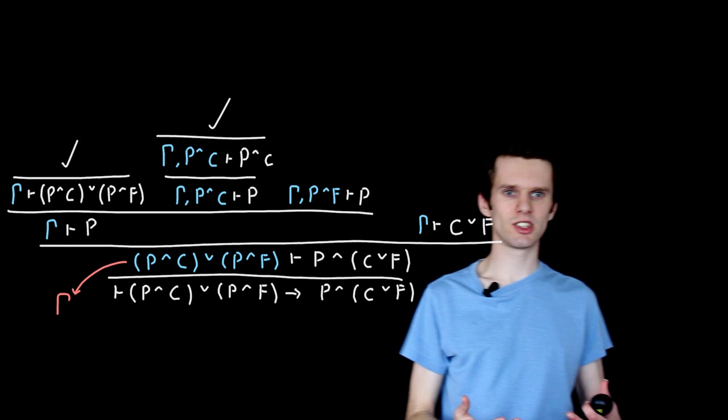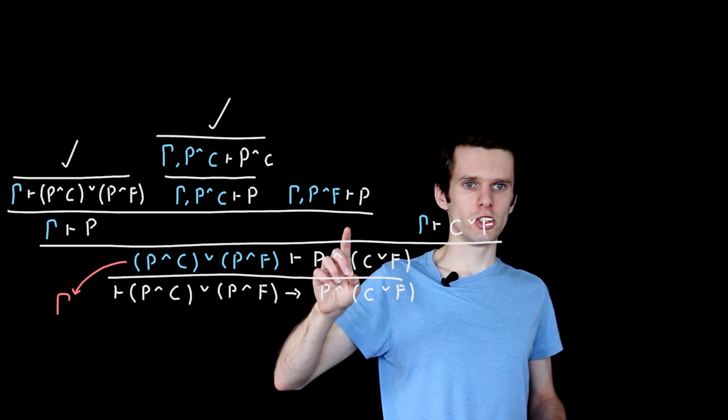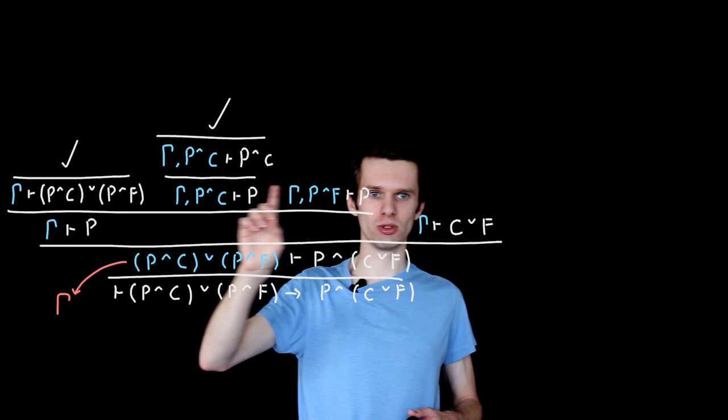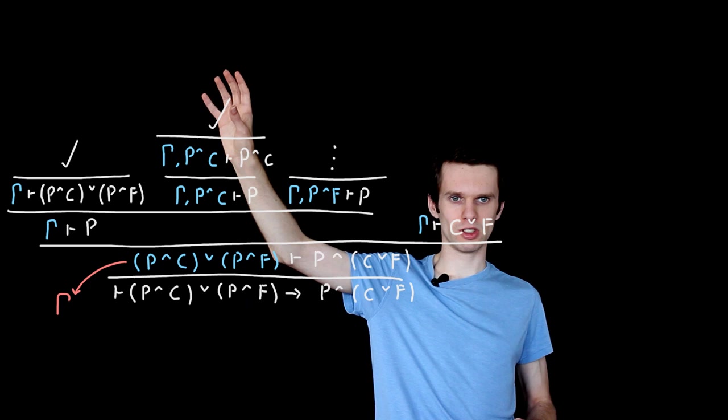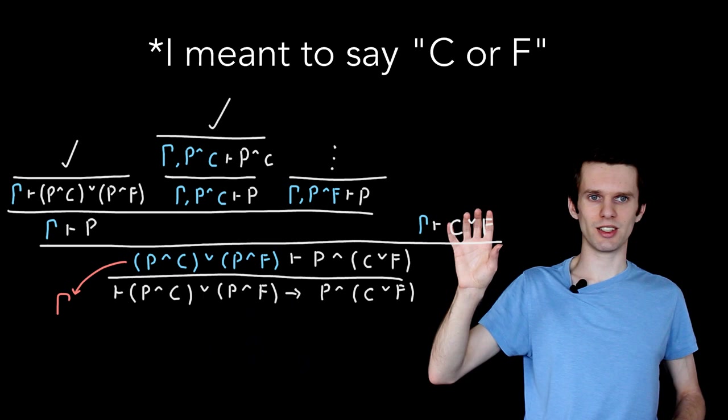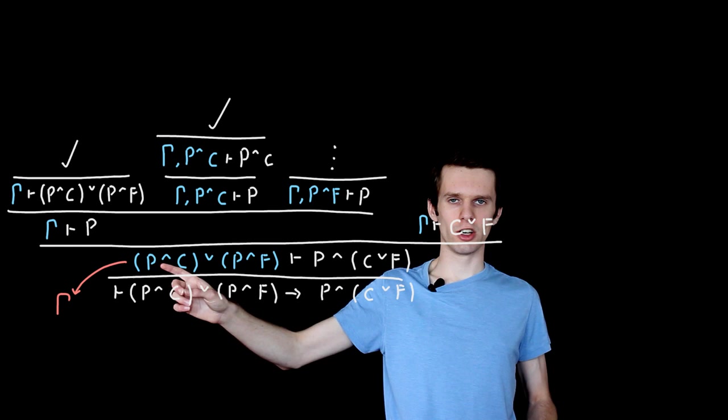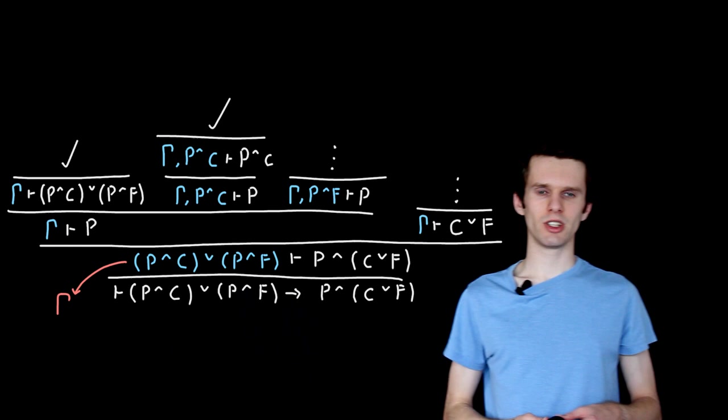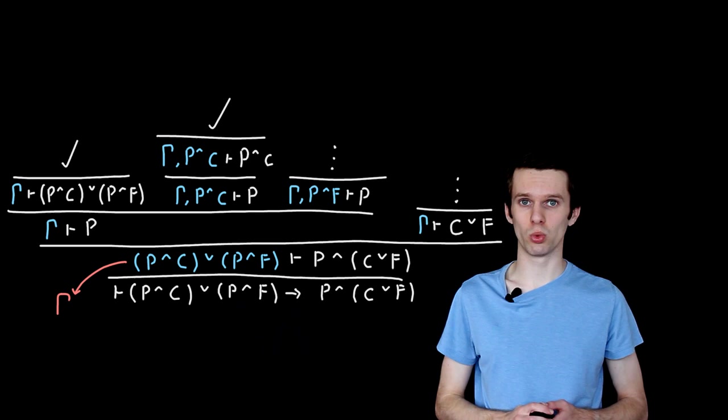This branch is almost identical to the P branch, but this time we're using the assumptions in gamma, the assumption here, to show that P holds. Sorry, no, we're not. We're showing that under the assumption that only this right-hand disjunct holds, to show that P holds. I'm not going to show that because it's almost identical to this. And what we're doing in this branch is using the assumption gamma to show that C or F holds. And intuitively as humans, we can see this because C holds in this disjunct and F holds here.